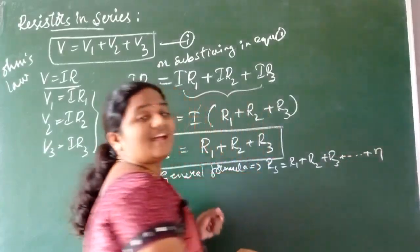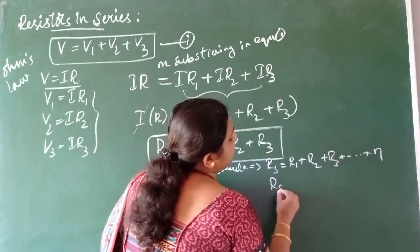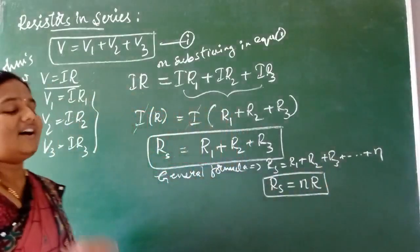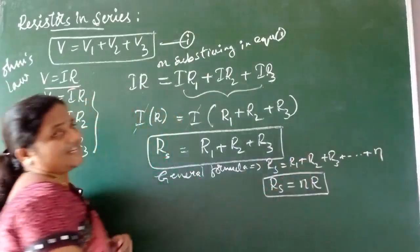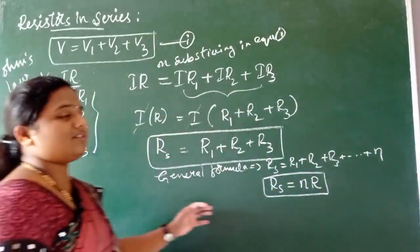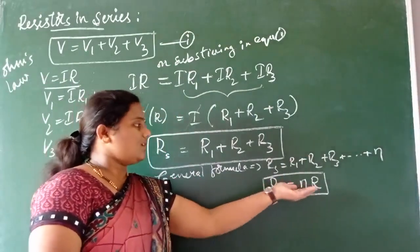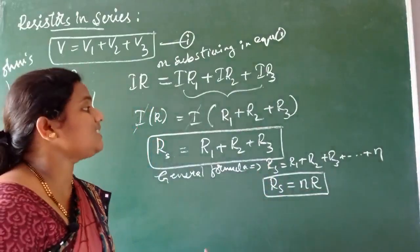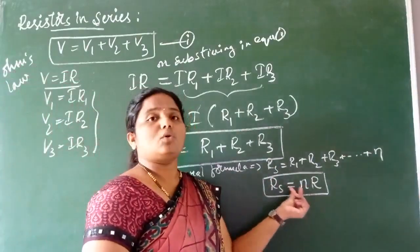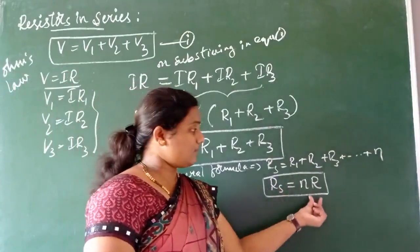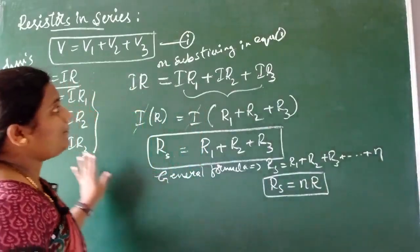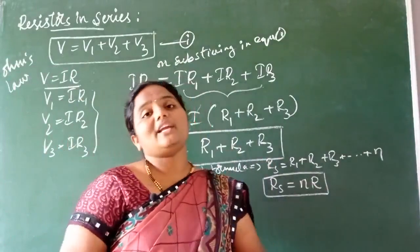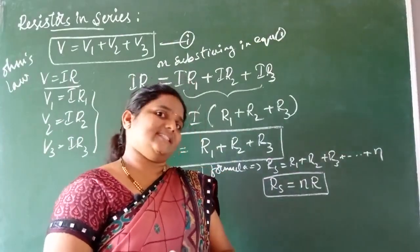If N identical resistors each of resistance R are connected in series, then R_s = N × R, where N is the number of resistors and R is the resistance of each. Remember this formula when solving problems. In series, the equivalent resistance equals the sum of individual resistances.